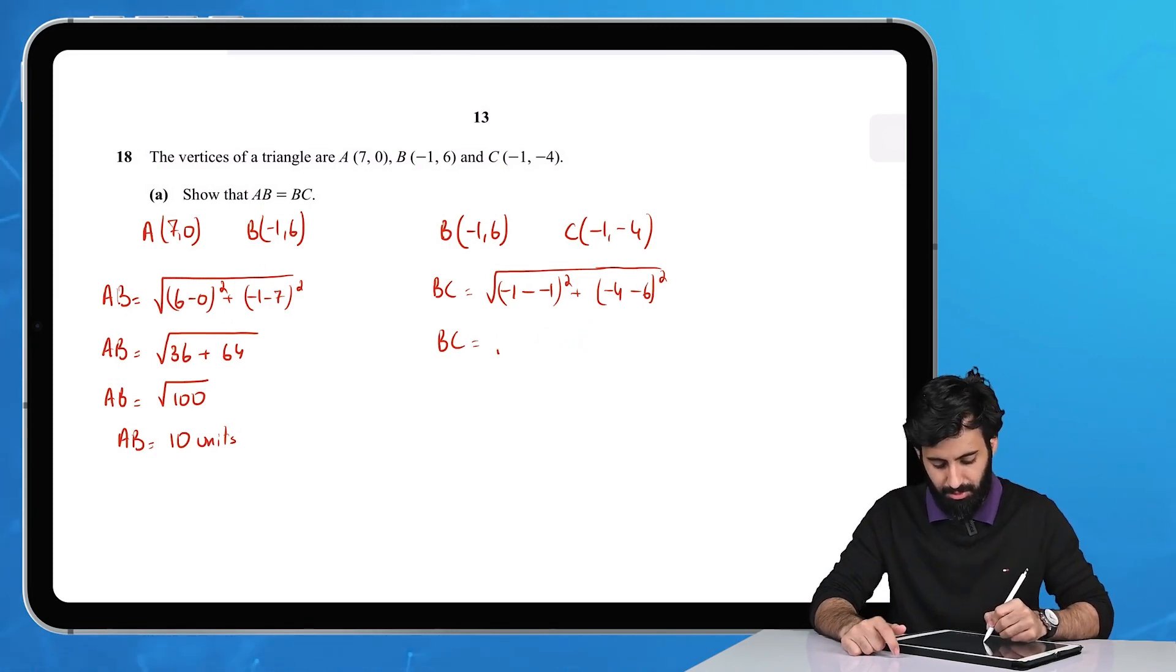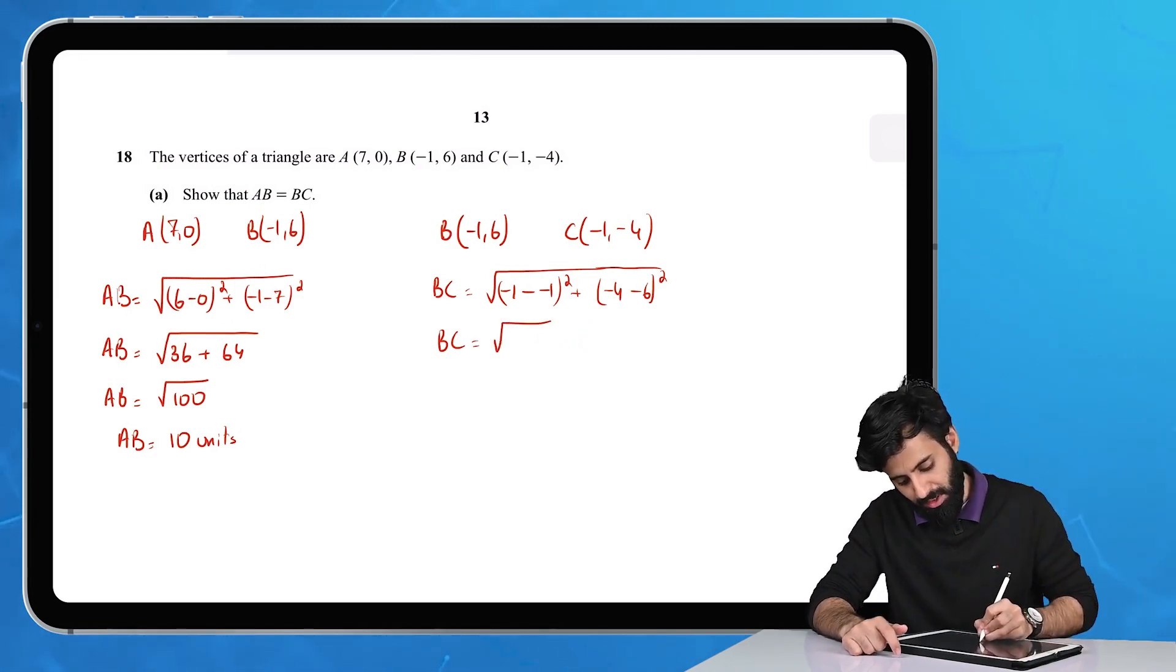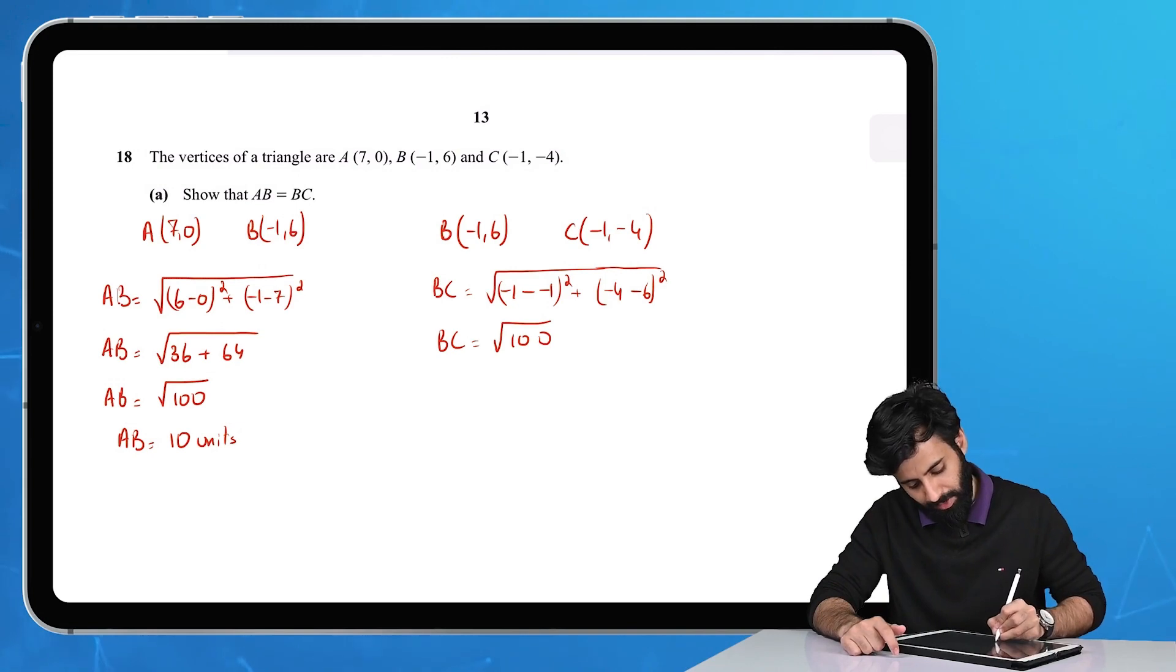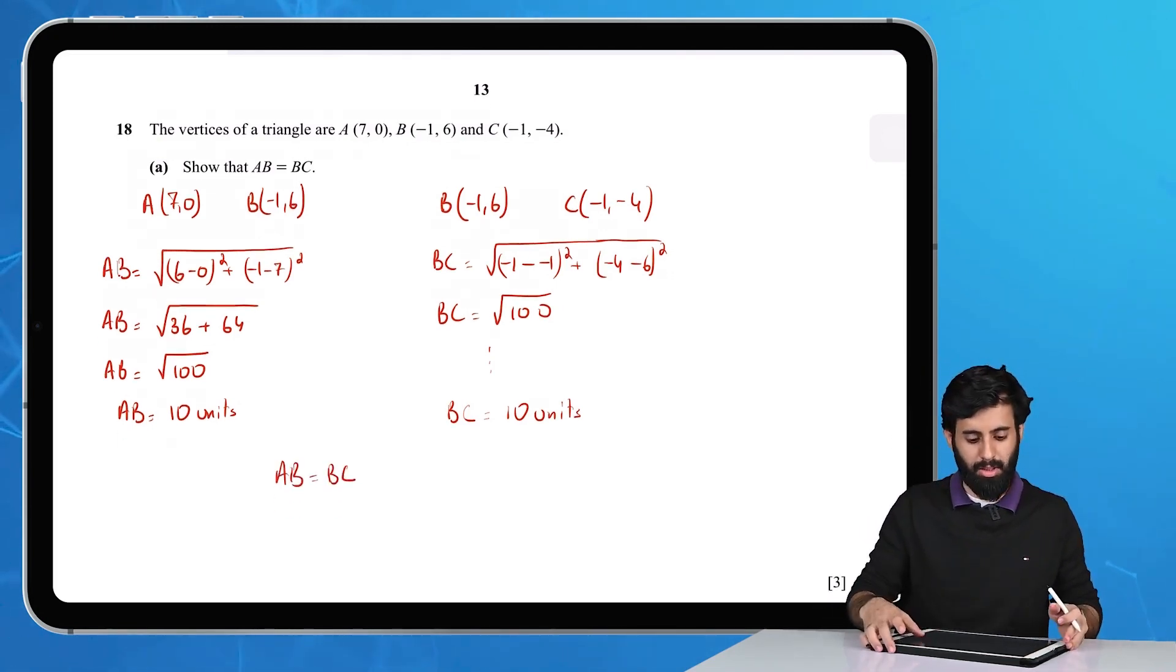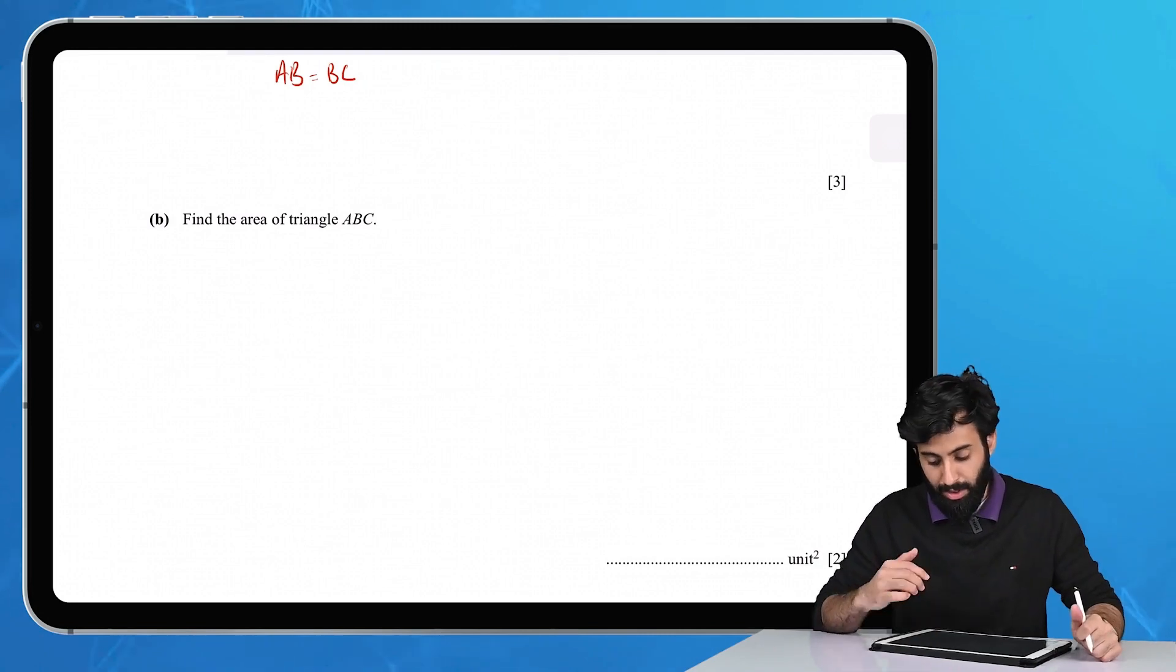So that's 0 squared plus (-10) squared, which is 100. Square root of 100 equals 10 units again. There you go, AB is in fact equal to BC. That's the end of the first part.